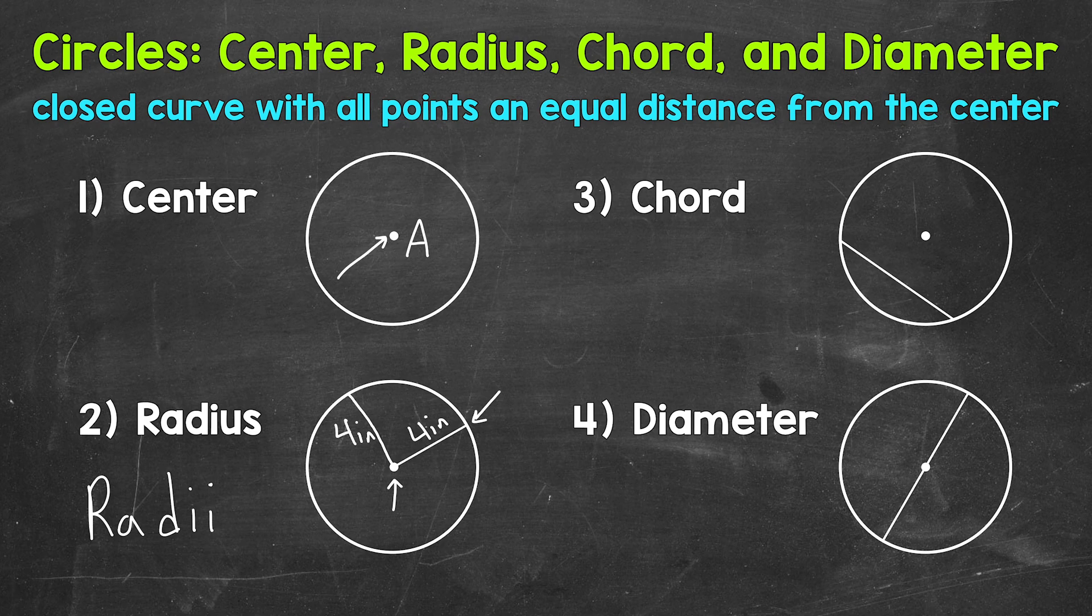Next, we have chords. And a chord is a line segment that connects two points on the circle. So one point right here, and a line segment to another point on the circle right here. So we have a line segment that connects two points on the circle. There's no particular direction or positioning of the points that are connected, just the fact that two points on the circle are connected. And that's going to be a chord.